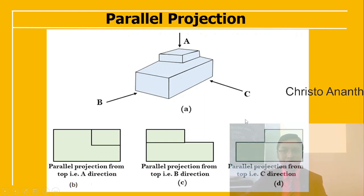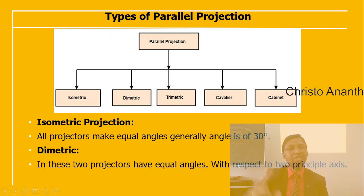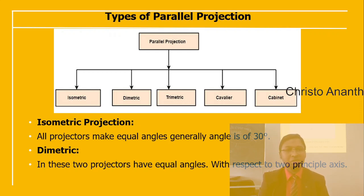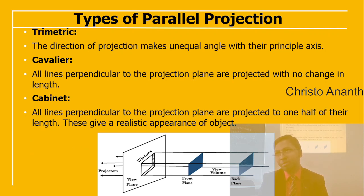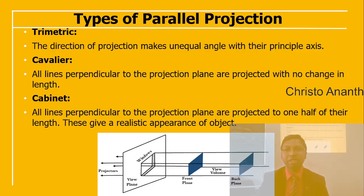Parallel projection types include isometric, diametric, trimetric, cavalier, and cabinet. In isometric, all projectors make equal angles of 30 degrees. In diametric, two projectors have equal angles with respect to two principal axes. In trimetric, the projection direction makes unequal angles with all three principal axes. In cavalier, lines perpendicular to the projection plane are projected with no change in length. In cabinet, those lines are projected to one half their length, giving a more realistic appearance.